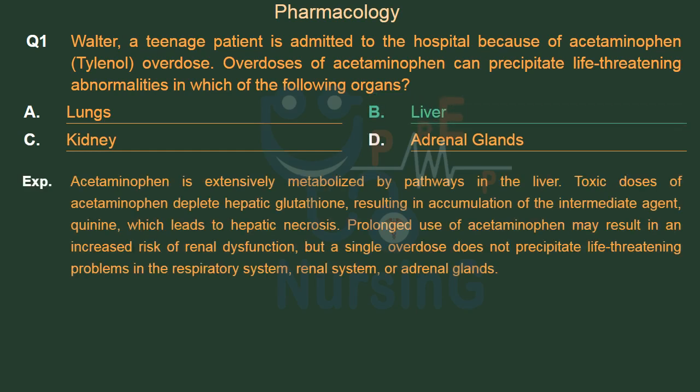Acetaminophen is extensively metabolized by pathways in the liver. Toxic doses of acetaminophen deplete hepatic glutathione, resulting in accumulation of the intermediate agent quinine, which leads to hepatic necrosis. Prolonged use of acetaminophen may result in an increased risk of renal dysfunction, but a single overdose does not precipitate life-threatening problems in the respiratory system or renal system.